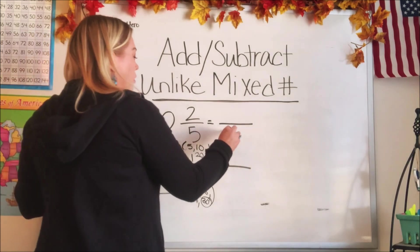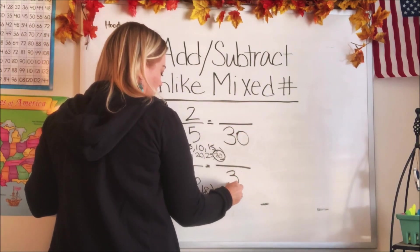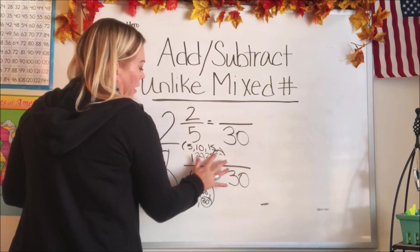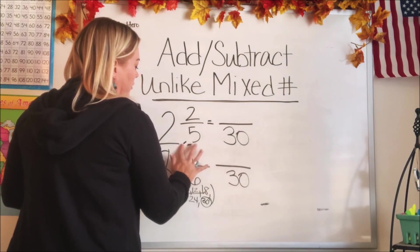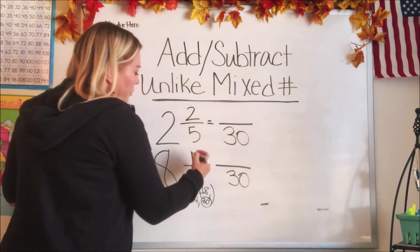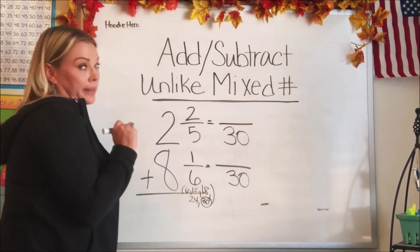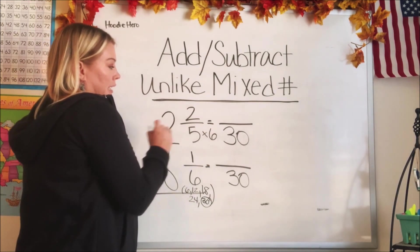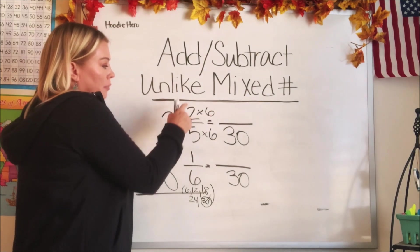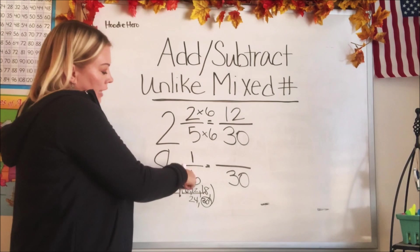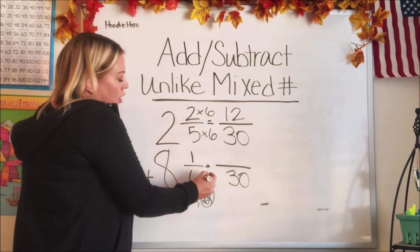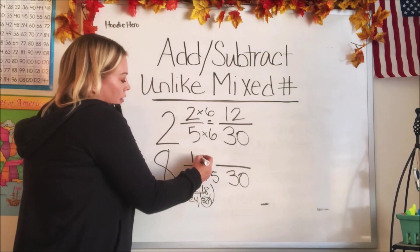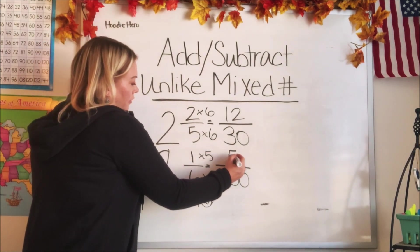That's going to be our new denominator. It's going to be a big one. So what we do to the bottoms, we've got to do to the top. How did we get from 5 to 30? What did we multiply by? We multiplied by 6. What we do to the bottom, we have to do to the top. 2 times 6 is 12. Let's do the bottom fraction. What did we multiply the 6 by to get to the 30? 5. Very good. And we do that to the top. What's 1 times 5? 5.